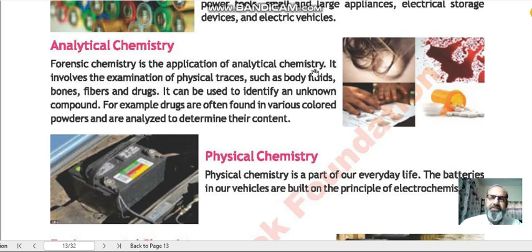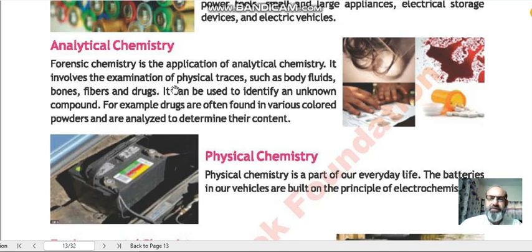Number 3: analytical chemistry. Forensic chemistry is an application of analytical chemistry. It involves the examination of physical traces such as body fluids, bones, fibers, and drugs, and can be used to identify an unknown compound. For example, drugs are often found in various colored powders and are analyzed to determine their content. In analytical chemistry, we take samples — blood samples, fluid samples, or tissue samples — and analyze them to determine their contents.